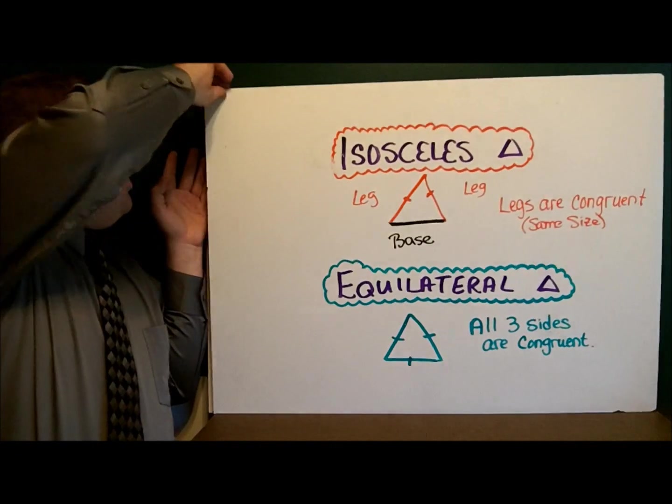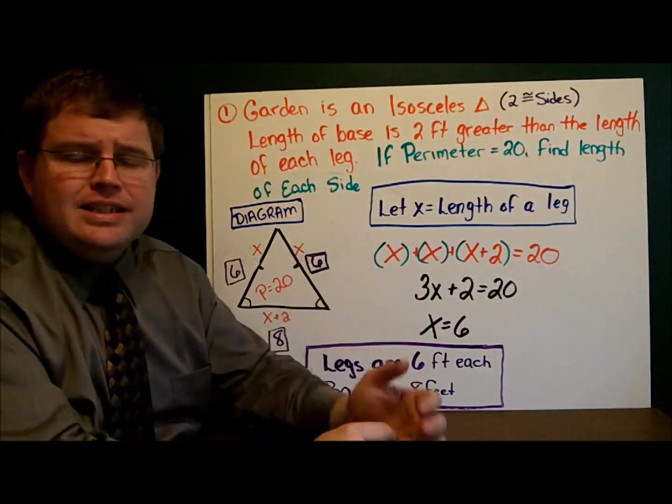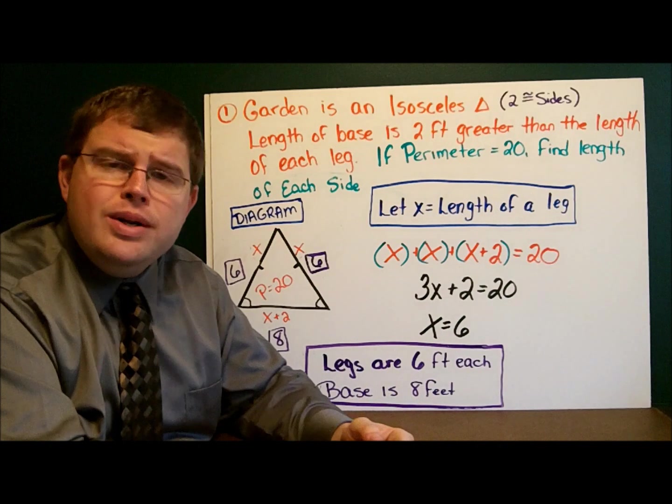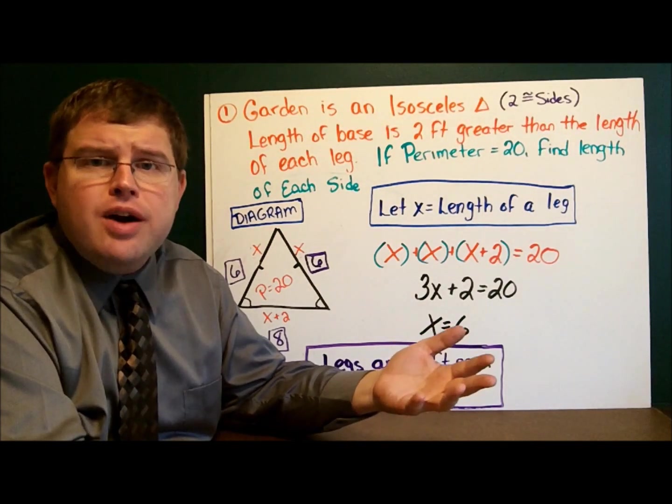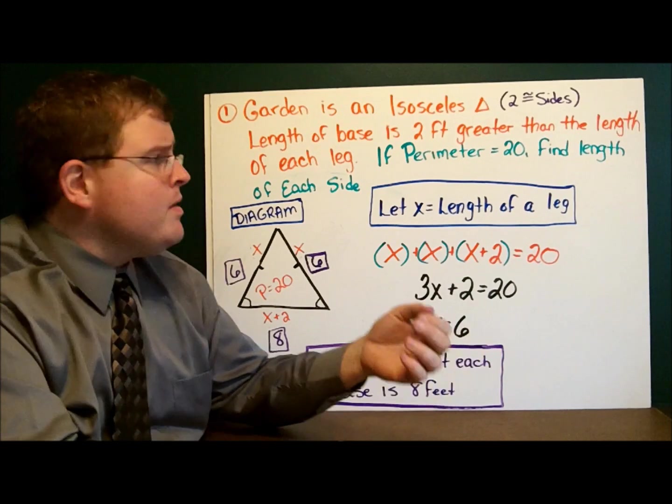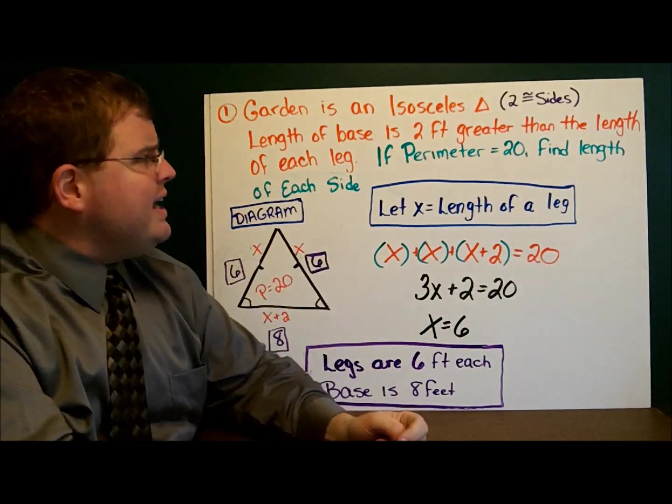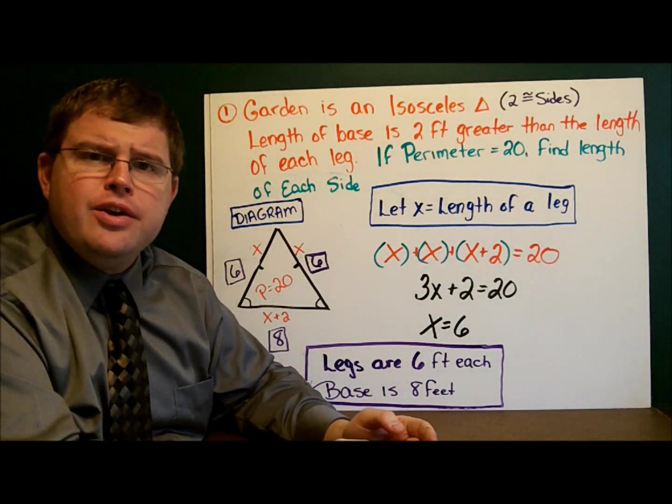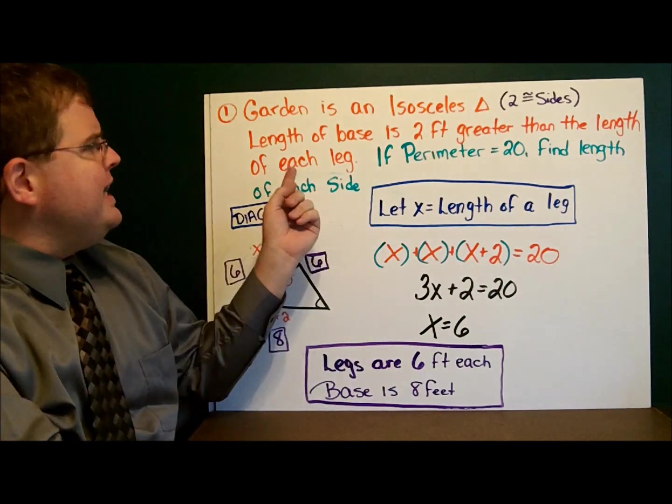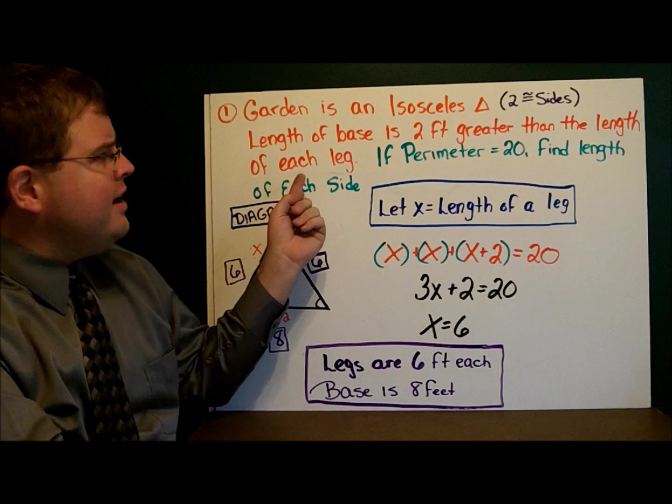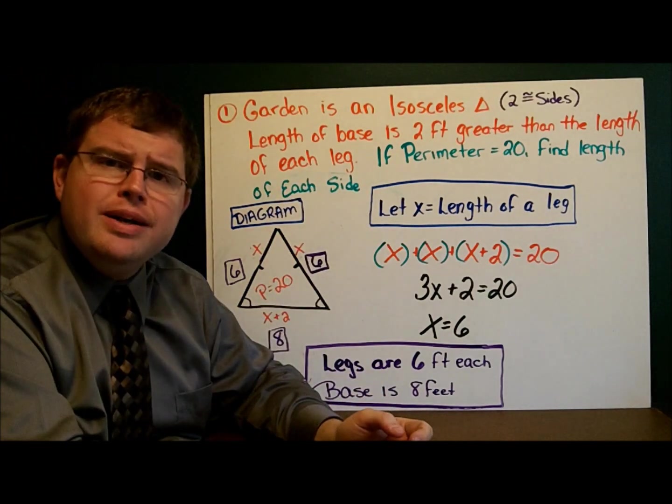In example one, we just so happen to have a garden. That's an isosceles triangle. And who doesn't love a garden? I mean, maybe we're growing some nice flowers or perhaps strawberries. We'll make some strawberry shortcake. It says that the length of the base is two feet greater than the length of each of the sides. And they want us to find the length of each side if the perimeter is 20.